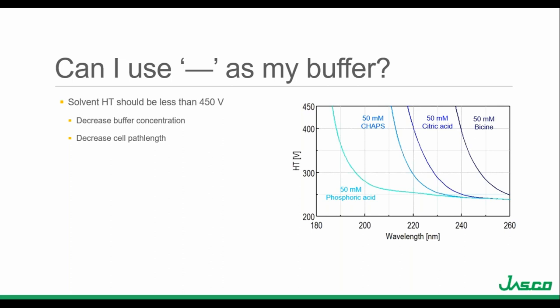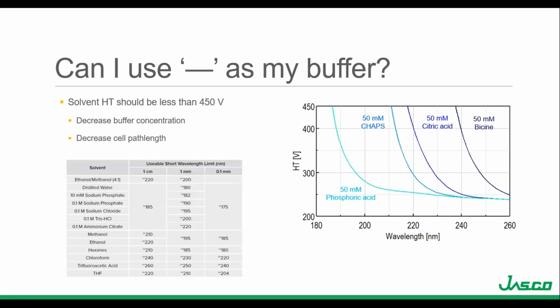Protein stability takes precedent over the CD spectrum — if your protein isn't stable in the buffer system, the CD spectrum won't accurately represent the state of your sample. If the solvent absorbance is large and you can't reduce the concentration, limit the salt content, or change the buffer system, you can look at decreasing the path length, because again CD is based on Beer's Law. This table shows solvents and their wavelength limitations using different cuvette path lengths.